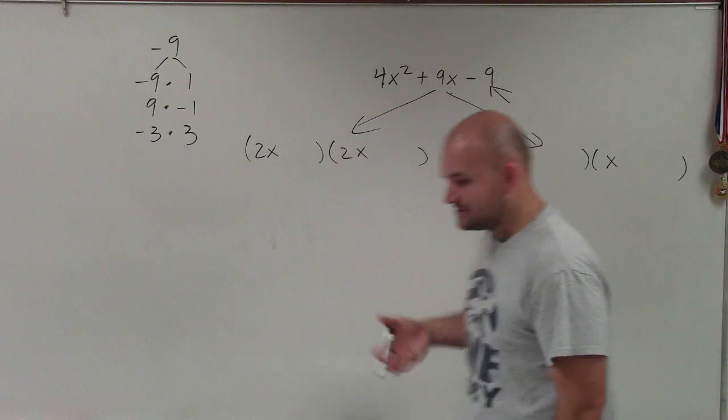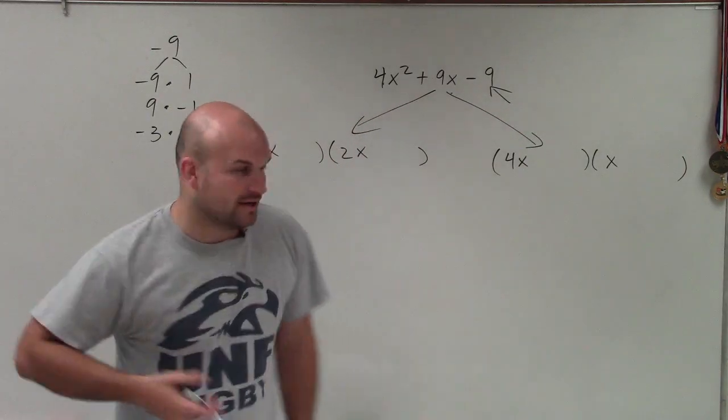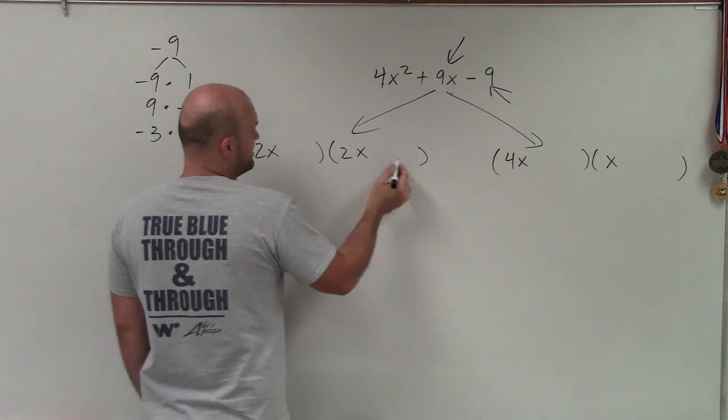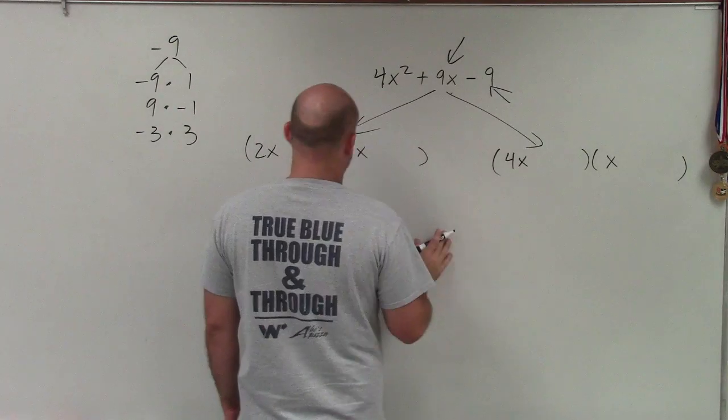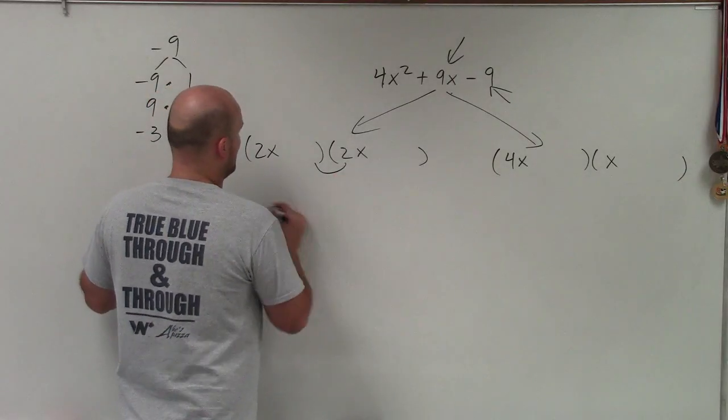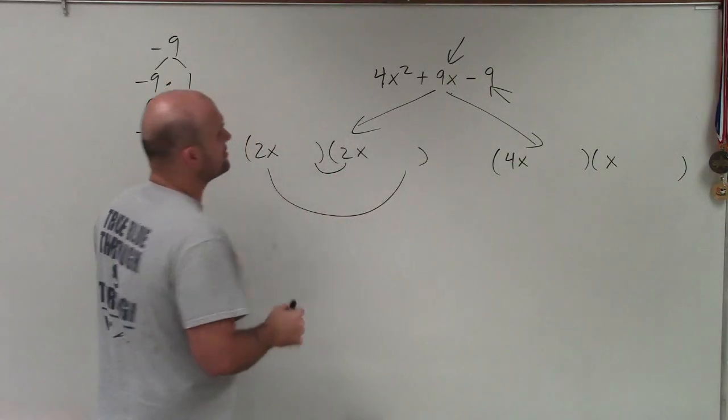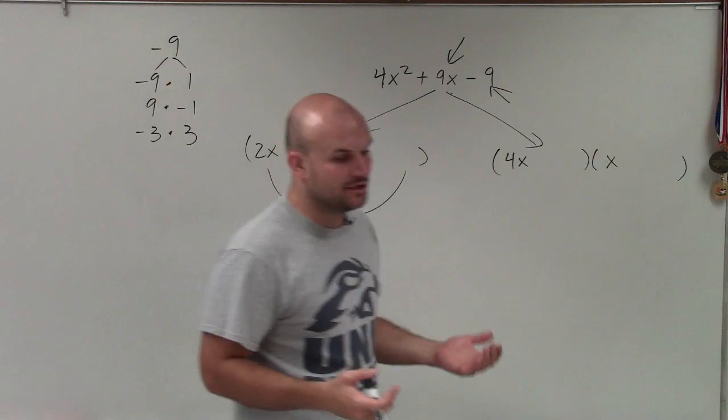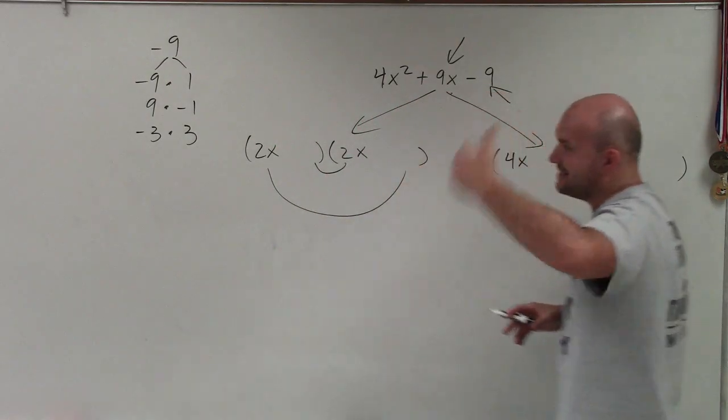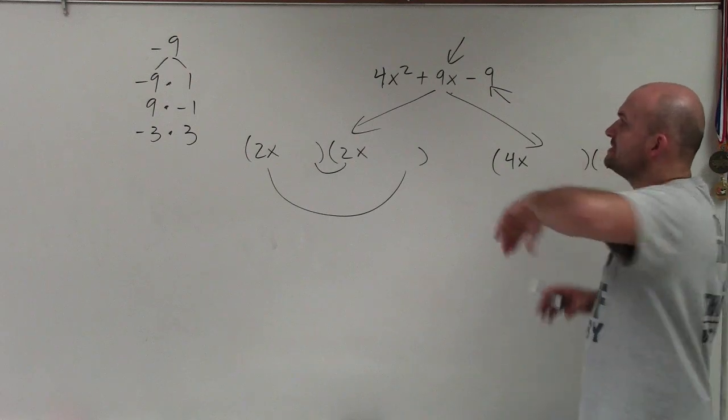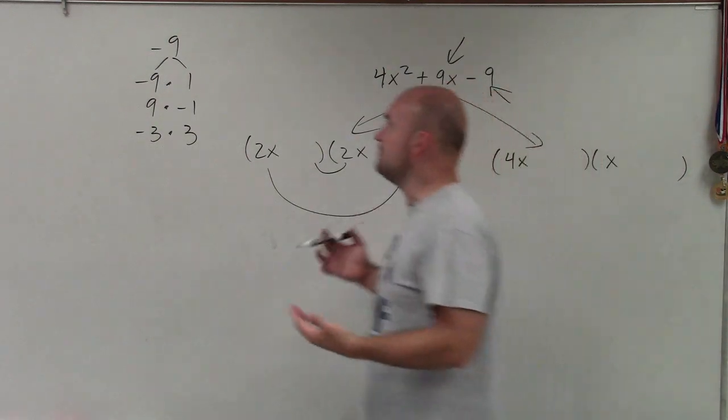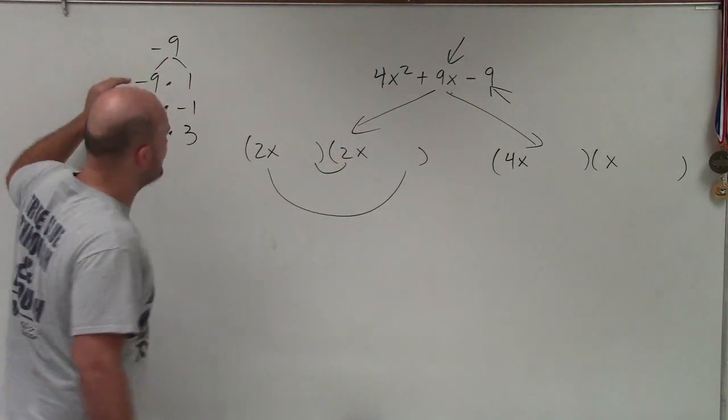To go through my thinking process, remember the last two terms are covered. You could use guess and check if you'd like. But we need to ask, what two numbers will multiply and, when combined, give me a positive 9x? When I'm thinking through this, since they're going to add to give me a positive, I know that the larger of the numbers has to be negative.